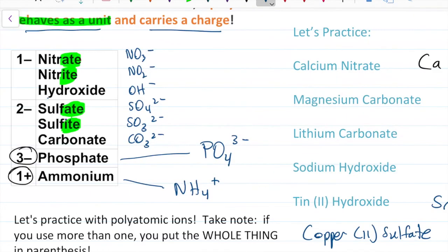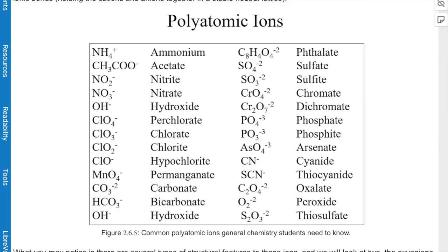There are two more polyatomic ions commonly used in an introductory chemistry course: phosphate, which is PO4³⁻, and ammonium, which is the only positive one — NH4⁺. If you Google 'list of polyatomic ions' you'll see there are many more, but once you know how to do this you can use any polyatomic ion. Follow the rules you've learned and you'll be just fine.